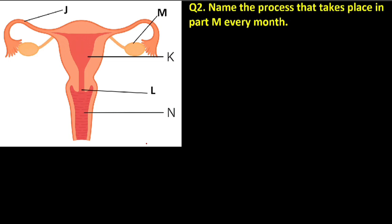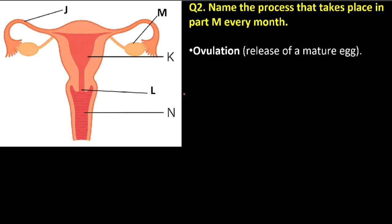Question number two: name the process that takes place in part M every month. M is the ovary. The name of the process is ovulation. Ovulation is the release of a mature egg — every month the ovary releases a mature egg, and that process is called ovulation.